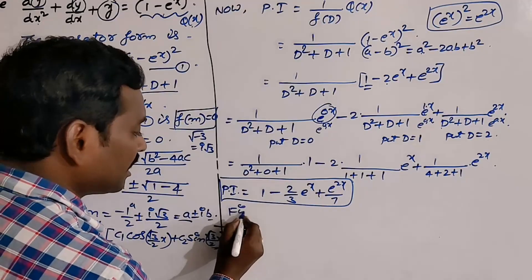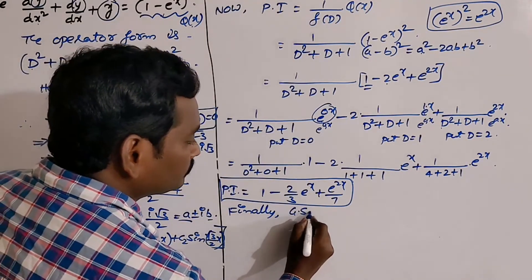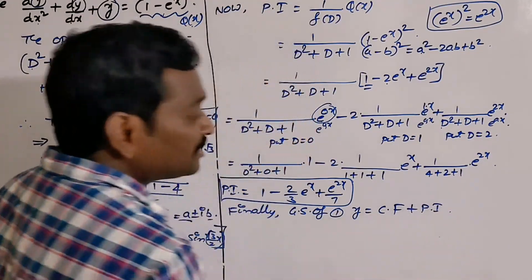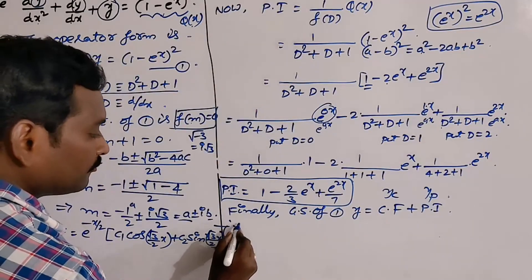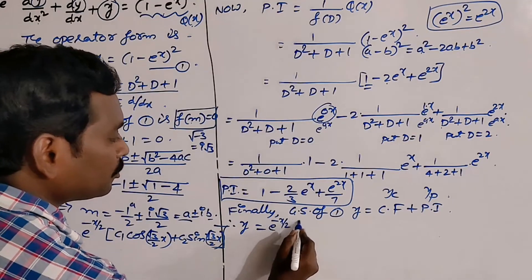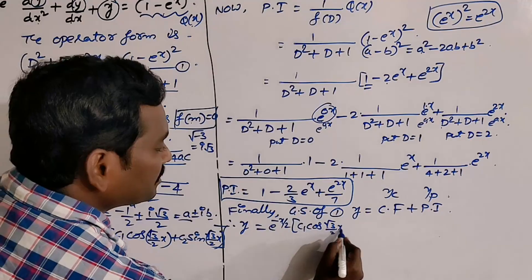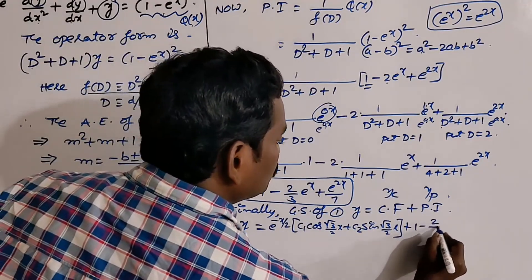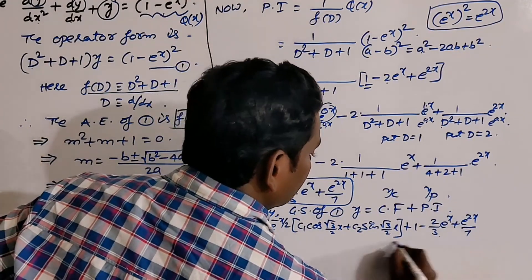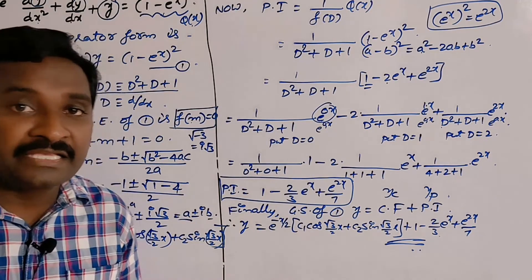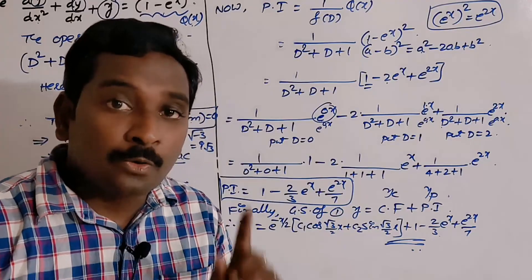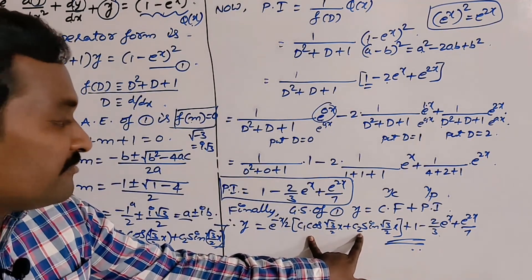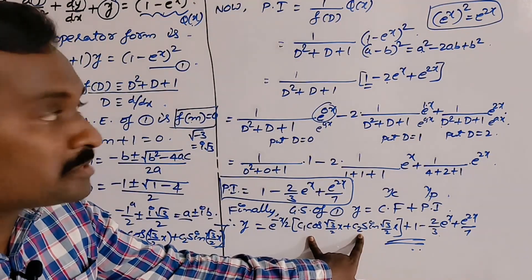For the general solution, add complementary function and particular integral: y = CF + PI. So y = e^(−x/2)(c₁cos(√3x/2) + c₂sin(√3x/2)) + 1 − (2/3)eˣ + e²ˣ/7. This is the required general solution. The general solution must contain a number of parameters equal to the order of the differential equation — here it is second order, so it contains two parameters c₁ and c₂. In the next video, more problems on this concept will be provided.